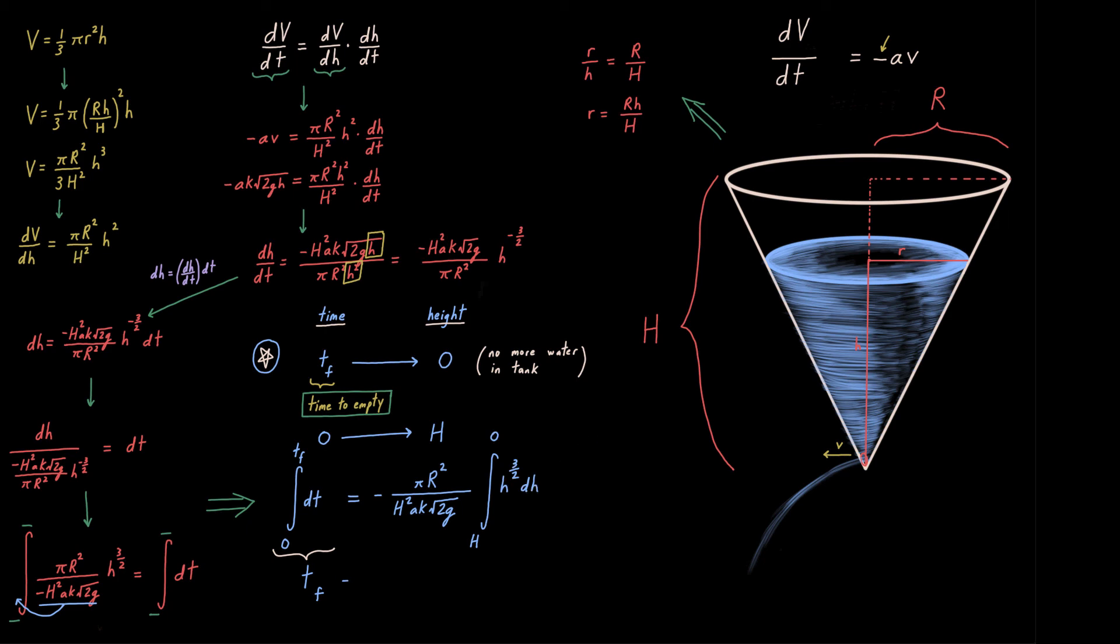Here we go from 0 to tf, and dt, of course, is tf. And we are simply left with evaluating that right side. It's 2/5 h to the 5 halves, evaluated from h to 0. We get this. Notice the negatives kill each other off. h squared under h to the 5 halves is h to the 1 half, and 2 over root 2 is simply root 2.